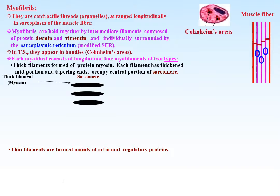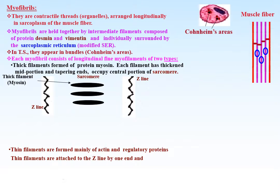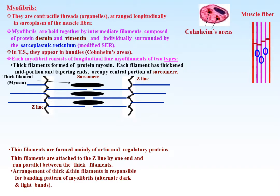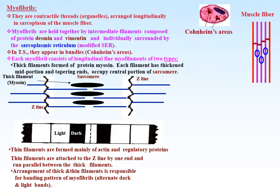Each thin filament is one micron in length. The thin filaments are attached by one end to the Z line, which is the limit of the sarcomere — the functional unit of the muscle fiber. The thin filaments run parallel and between the thick filaments. The arrangement of thick and thin filaments is responsible for the banding pattern on the myofibrils.